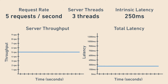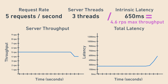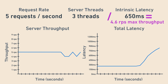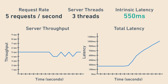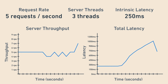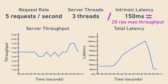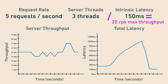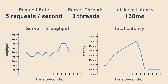For the next step, let's pretend there's a hiccup in our request processing, so intrinsic latency goes up to 650 milliseconds. The max throughput is now three threads divided by 650 milliseconds, which equals 4.6 requests per second — below the incoming rate again — so a queue starts to form and queuing latency grows, causing overall latency to grow. Now let's say we optimize things so each request only takes 150 milliseconds. Throughput becomes three threads divided by 150 milliseconds, which equals 20 requests per second. The queue empties, and total latency comes down to 150 milliseconds.